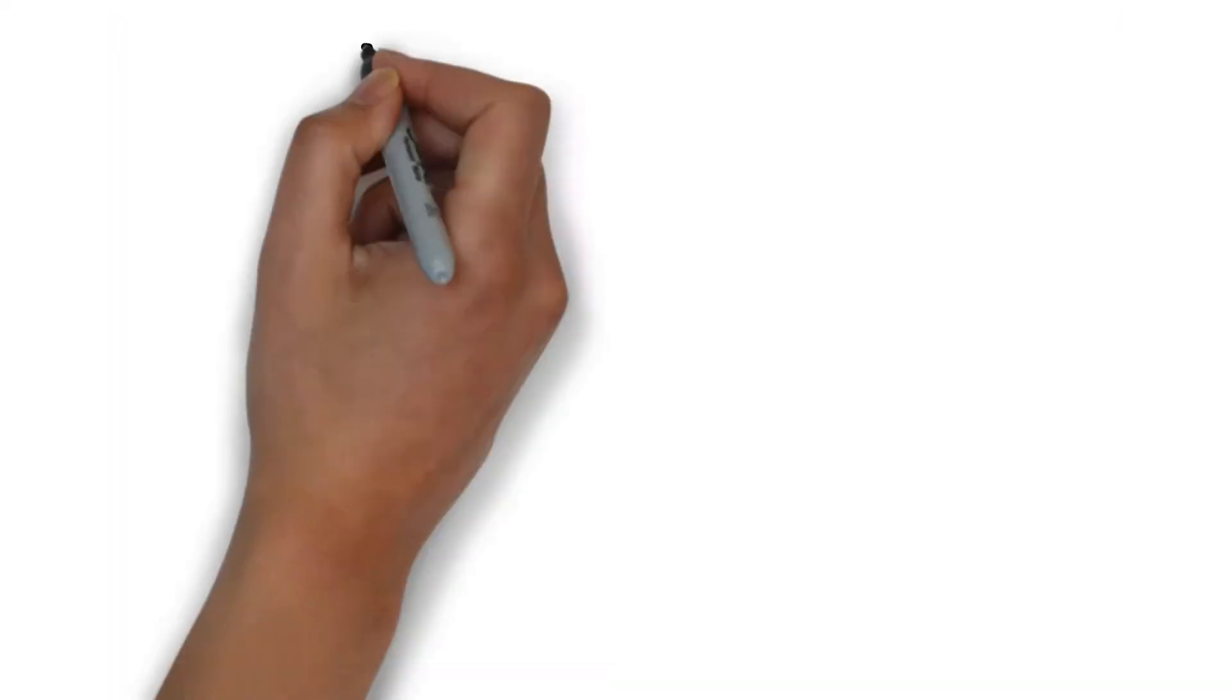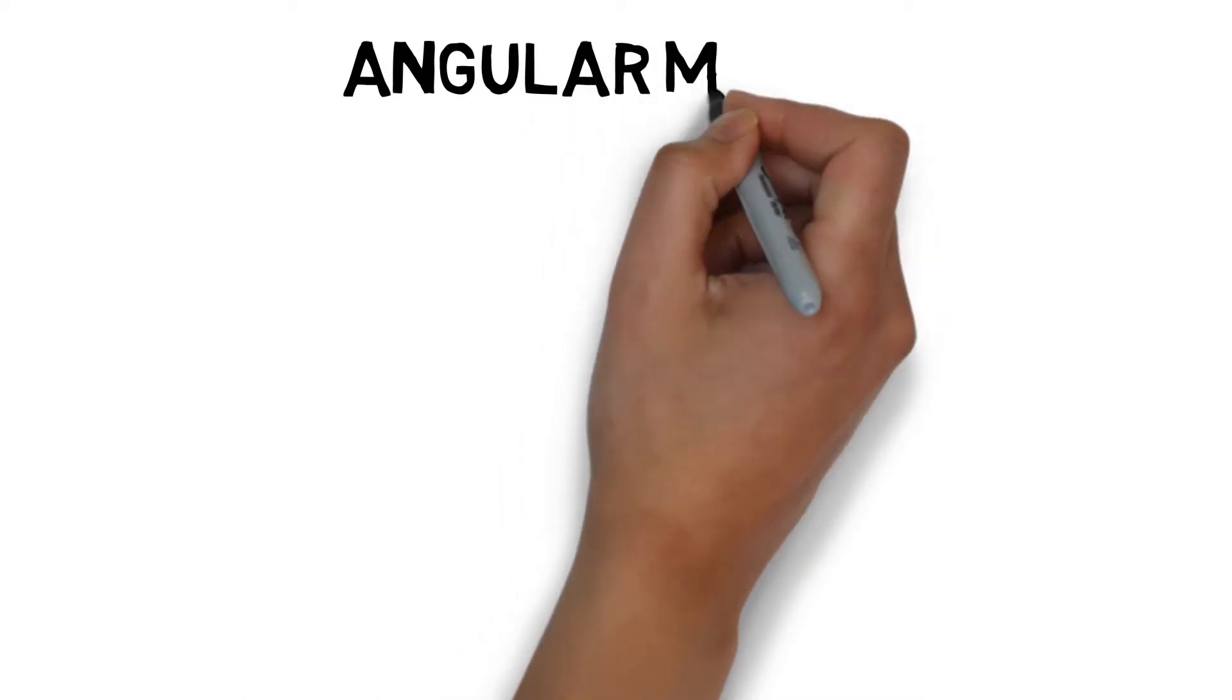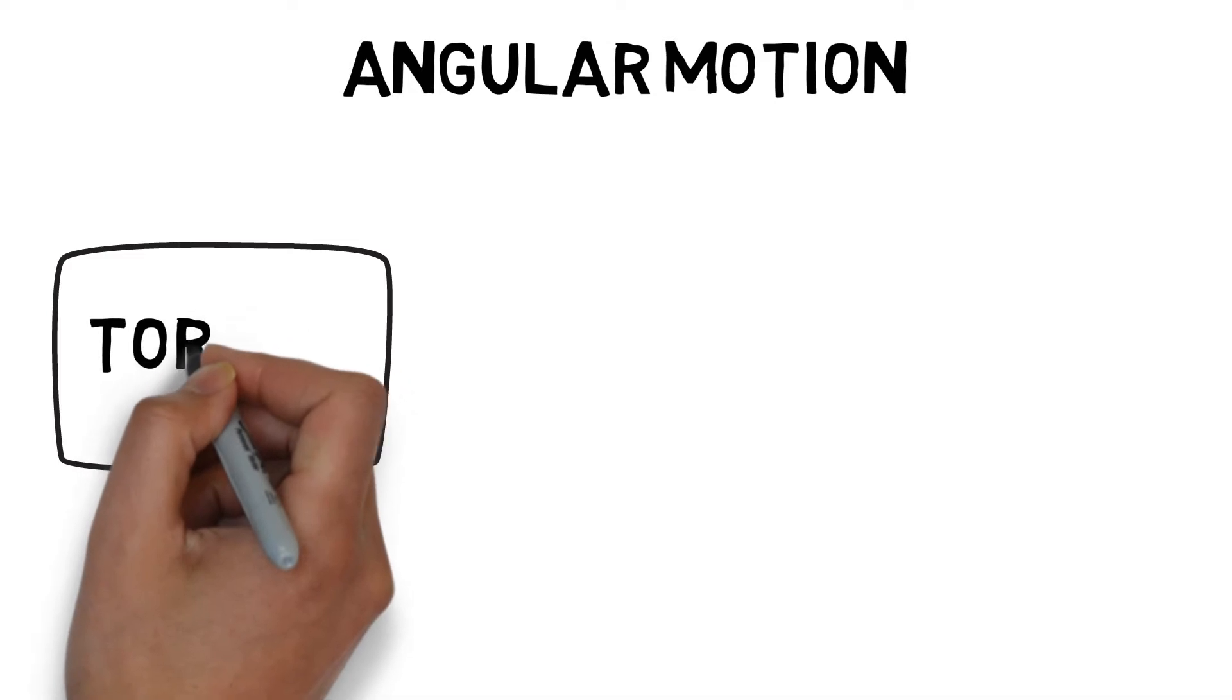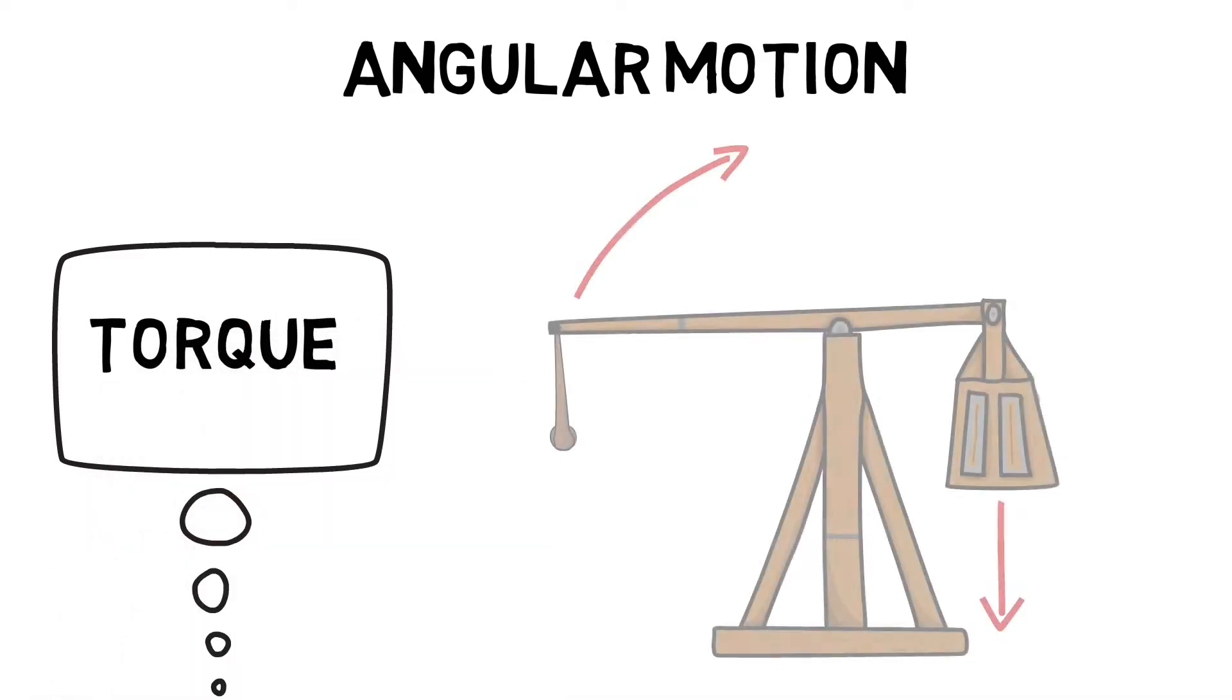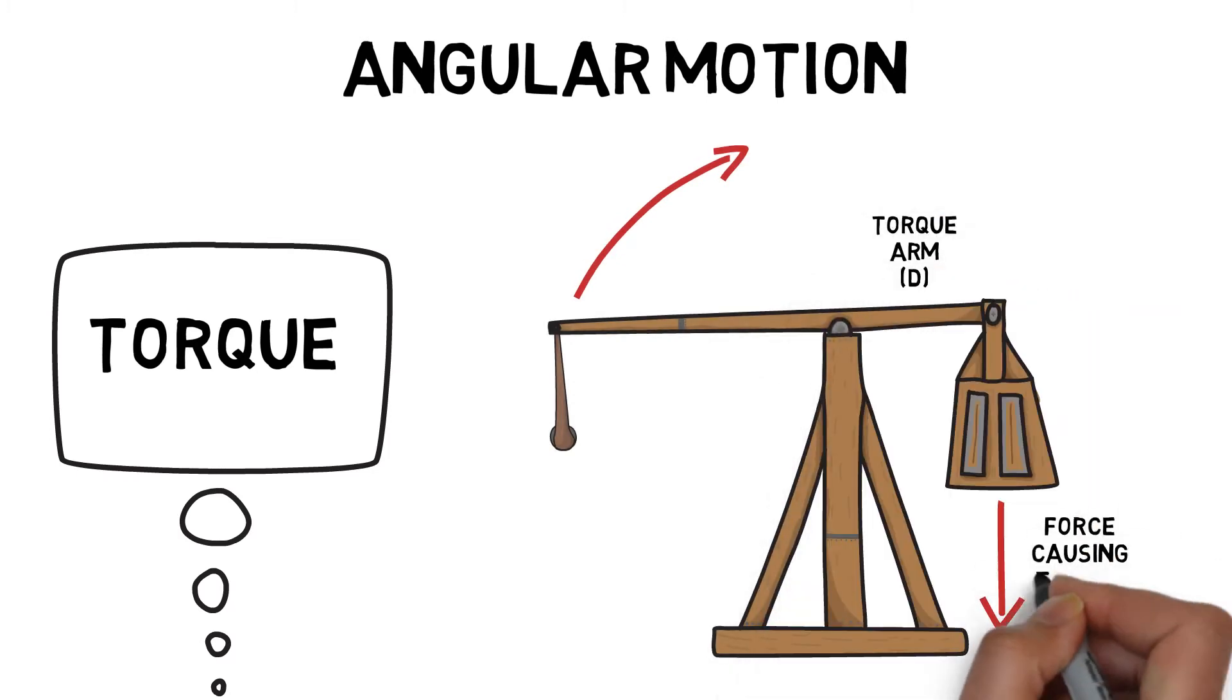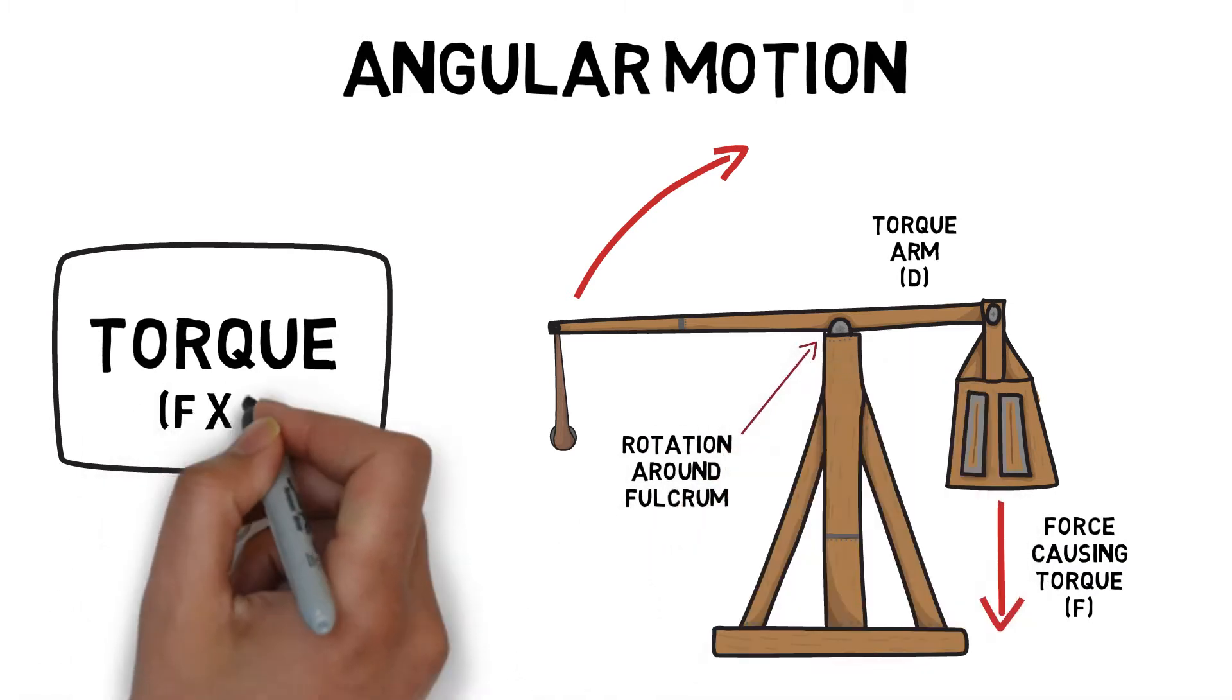Angular motion is movement around a fixed point or axis. It occurs when a force is applied outside the centre of mass. Torque is the rotational force that causes an object to turn around its axis of rotation. Torque can be measured by taking force times the distance of the moment arm from the fulcrum or axis of rotation.